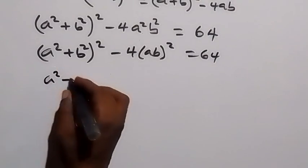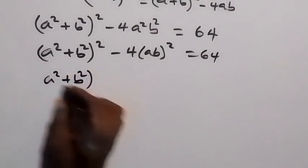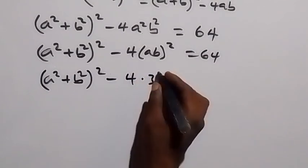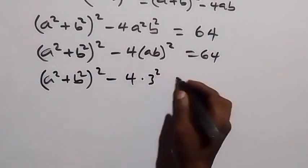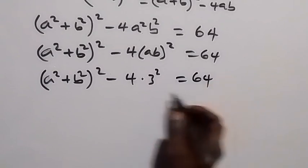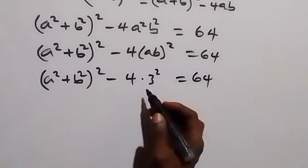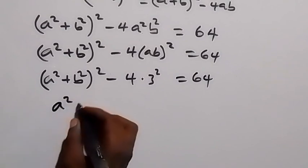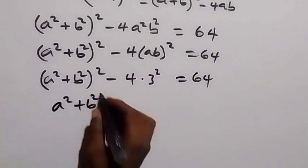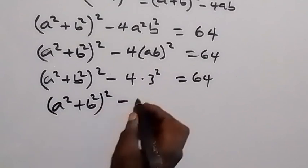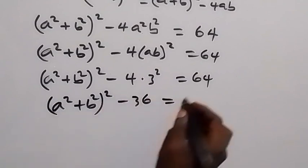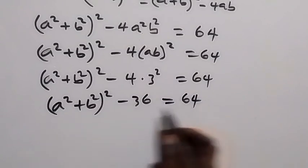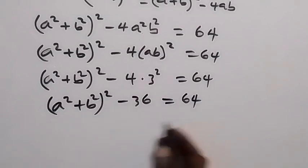This becomes a squared plus b squared, squared, minus 4 squared times 3 squared, equals to 64. And 3 squared is 9; 9 times 4 is 36. So we can write this as a squared plus b squared, squared, minus 36 equals to 64.